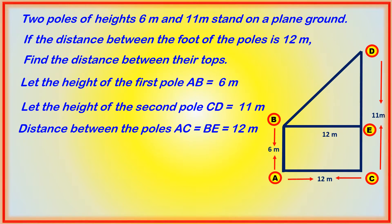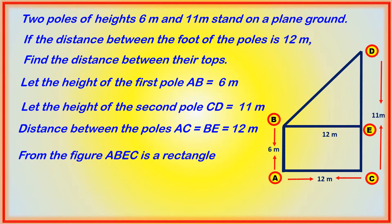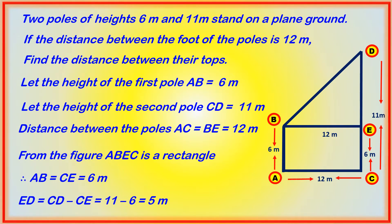From the figure, ABEC is a rectangle. Therefore AB is equal to CE, which is equal to 6 meters — opposite sides of a rectangle are equal. ED is equal to CD minus CE, which is equal to 11 minus 6, equal to 5 meters. Now in this problem we have to find out BD.